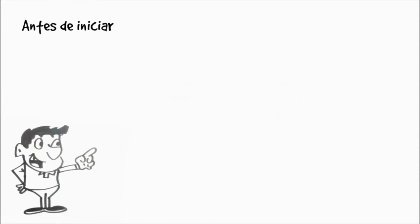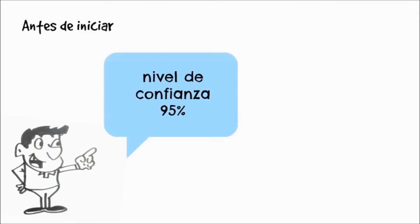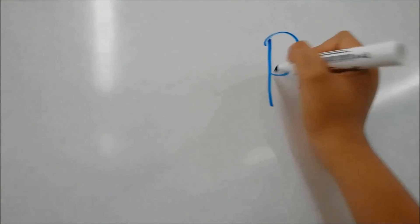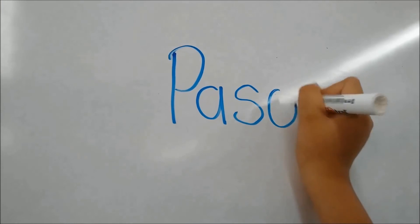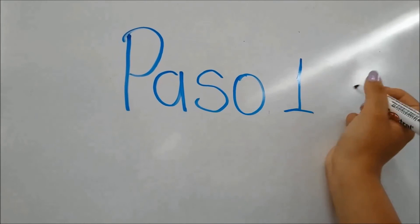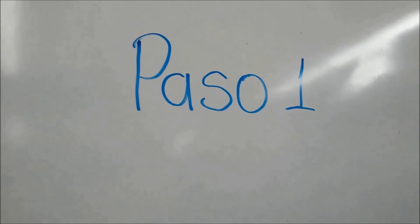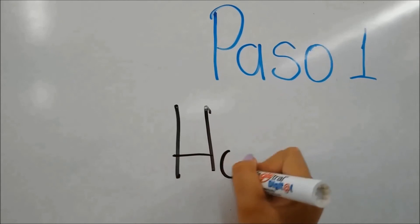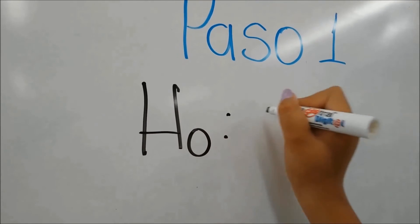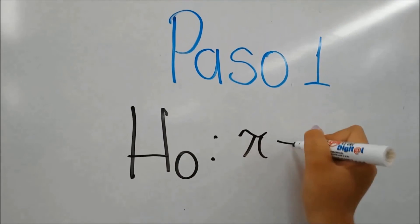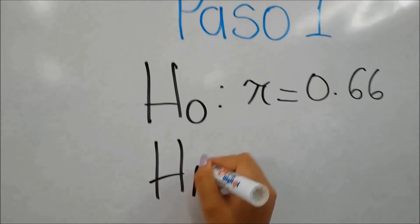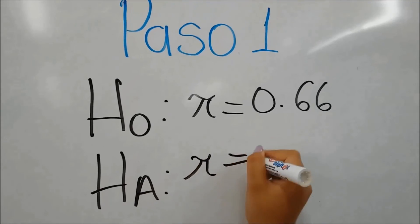Prueba de hipótesis para la proporción utilizando una población. Antes de iniciar, debemos considerar un nivel de confianza del 95%. Paso 1: queremos probar que el 66% de las personas les gustan los cupcakes de sabor vainilla. Expresaremos este porcentaje en decimales para realizar los cálculos. Planteamos la hipótesis de una prueba bilateral: hipótesis nula, la proporción de la población es igual a 0.66; hipótesis alterna, la proporción es diferente a 0.66.